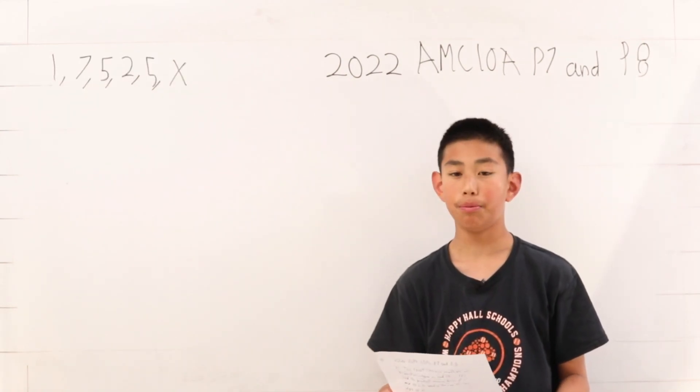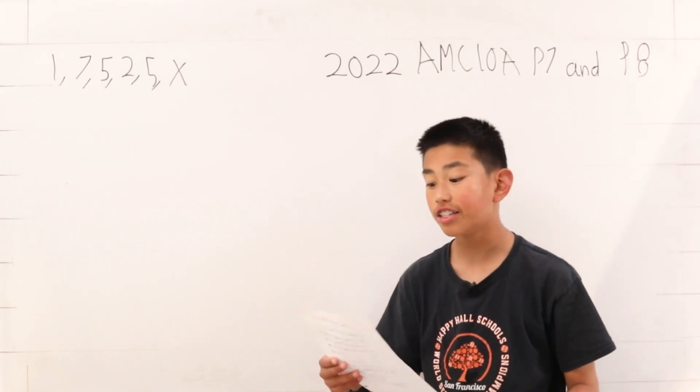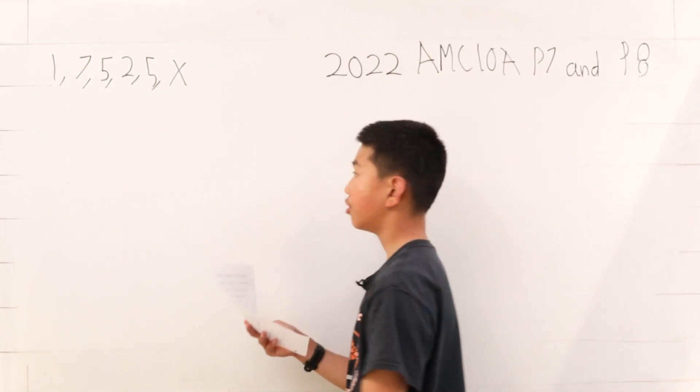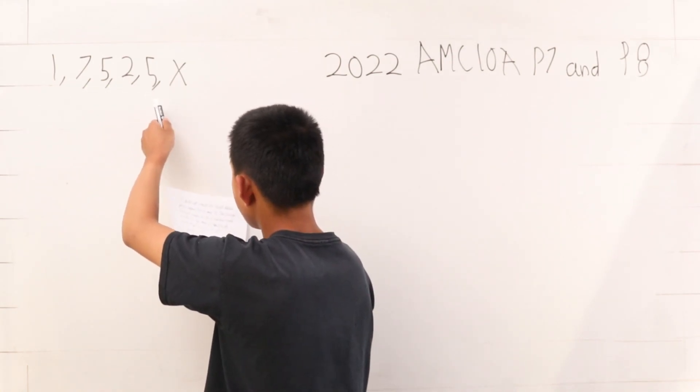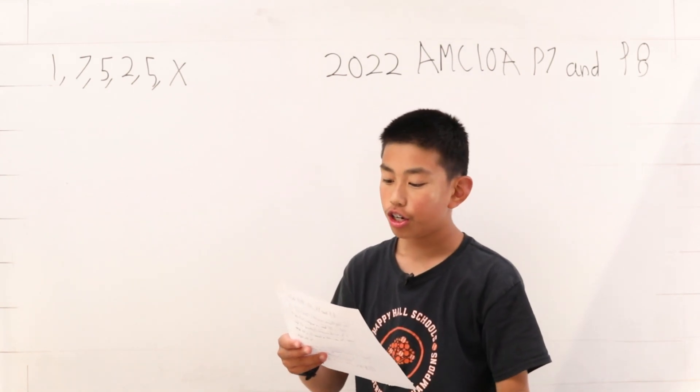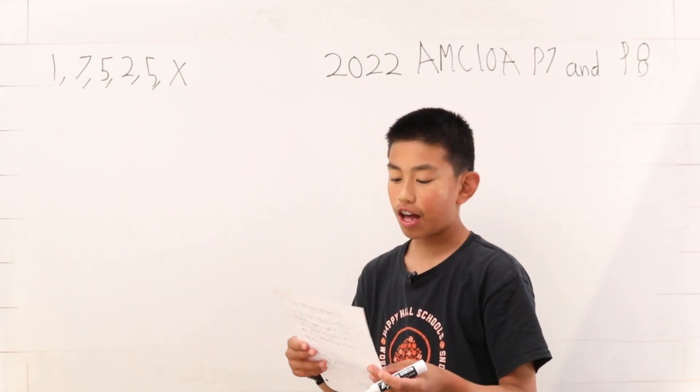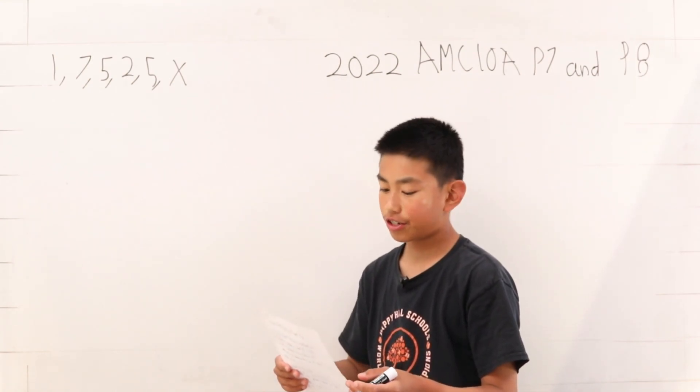Let's keep on going with problem 8. A data set consists of 6 non-distinct positive integers: 1, 7, 5, 2, 5, and x. The average arithmetic mean of the 6 numbers equals a value in the data set. What is the sum of all positive values of x?